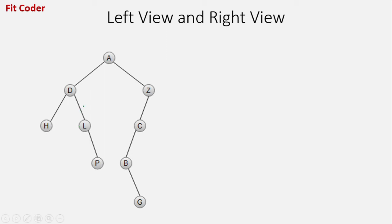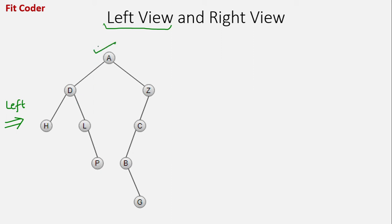Let's first understand what is left view. When you view this tree from the left direction, which nodes of this tree will be visible? That will be part of the left view. The nodes that will be visible are A, D, H, P, and G.